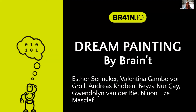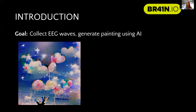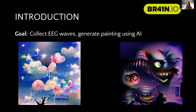Hello everyone. I'm Esther from the team Braint and we're from the Netherlands. We did the Dream Painting project. Our idea was to collect EEG waves from sleeping participants and generate paintings using AI with that EEG data. An example of an AI-generated painting would be this painting I'm showing on screen now — it's generated with two words: 'happy dream'. We also got quite the opposite with words like 'scary nightmare', so the paintings can really differ depending on the input.